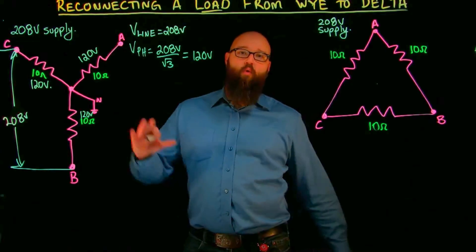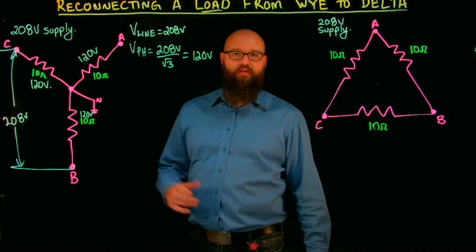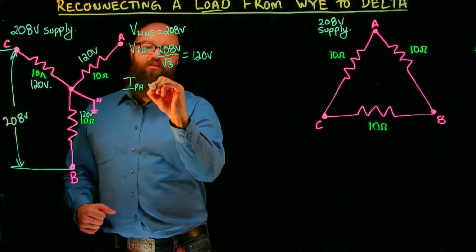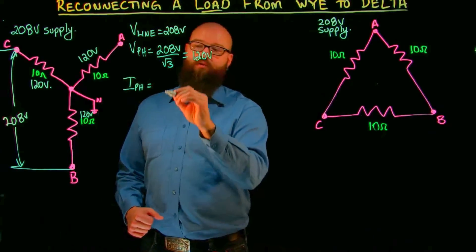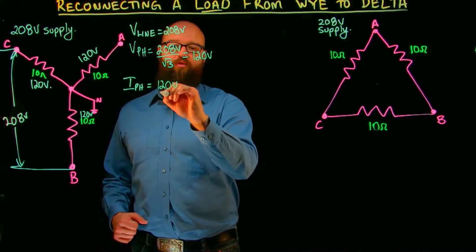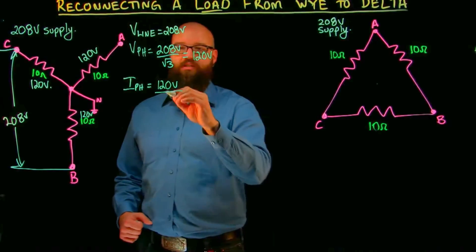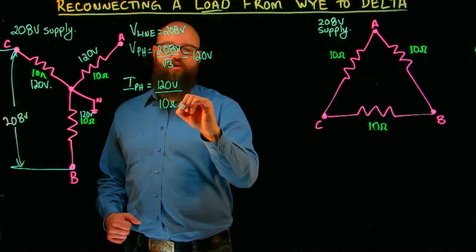So I phase is equal to phase voltage of 120 volts divided by phase impedance, in this case, of 10 ohms. I phase is equal to 12 amps.